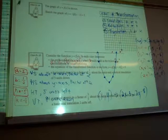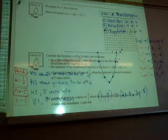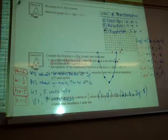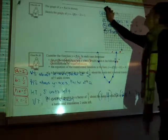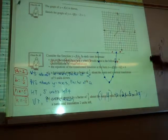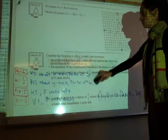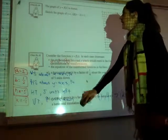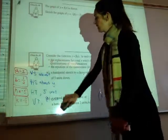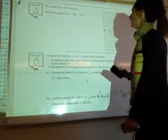Alright, next question, number 2. We're given a new graph. There it is. Okay, and a new transformation. This time we have y equals negative 2 of the function, sorry, negative 2 multiplied by the function of x minus 3, all plus 1.